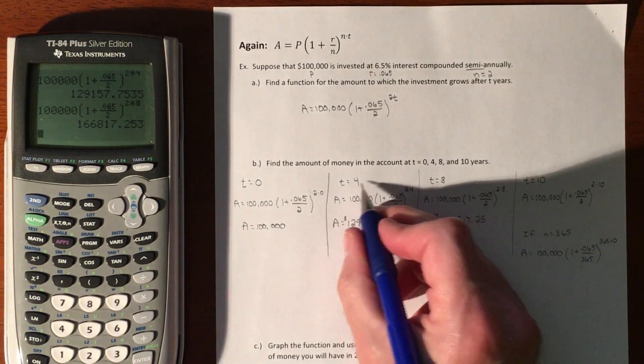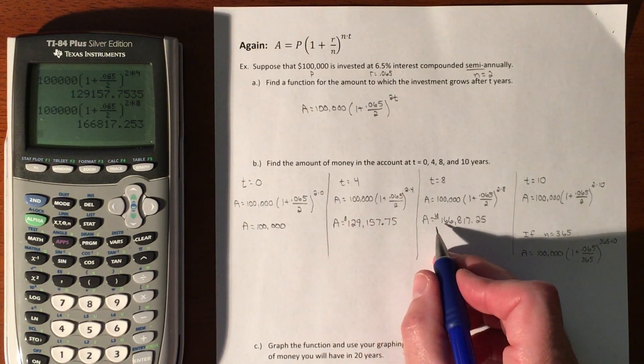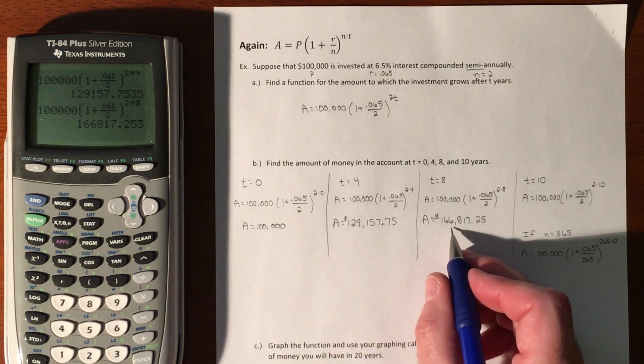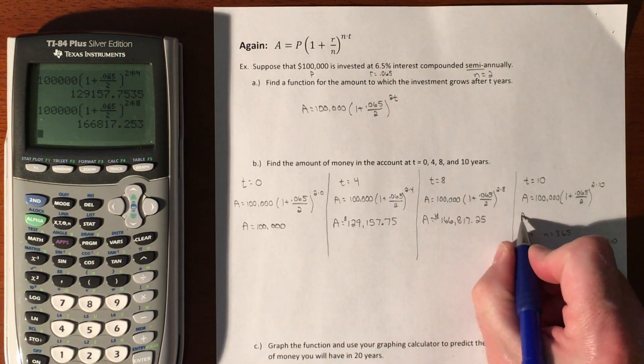Because you're giving it more time to compound on top of itself—earn interest earning interest—you're going to get more than double what you have, and that's always the case.